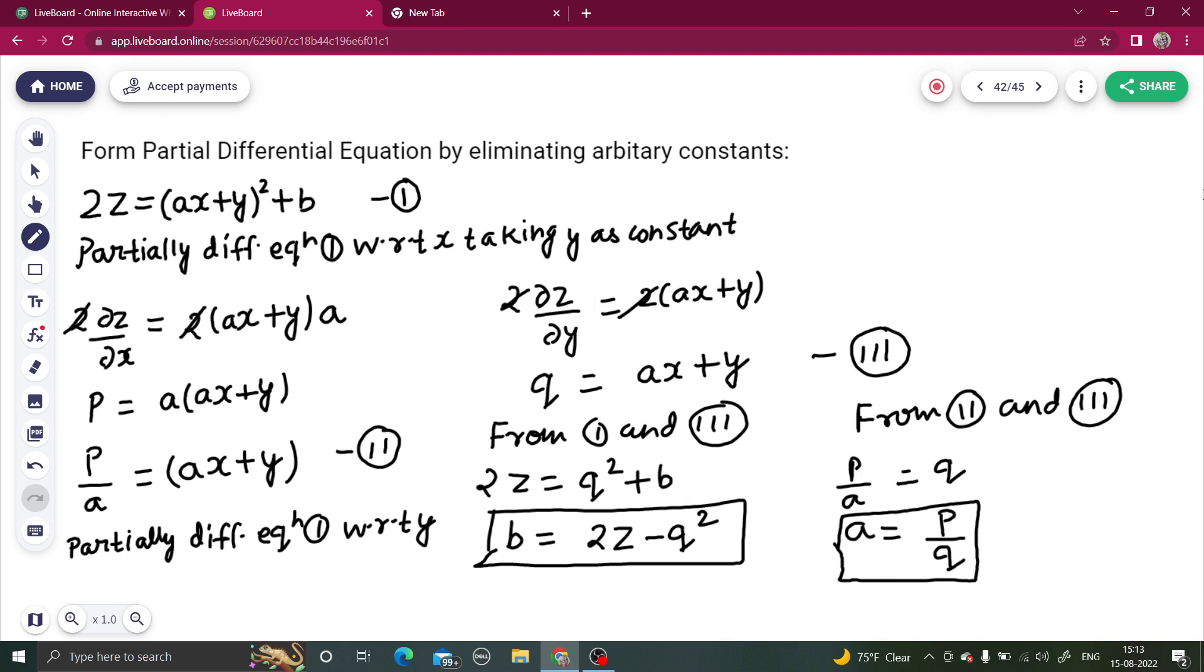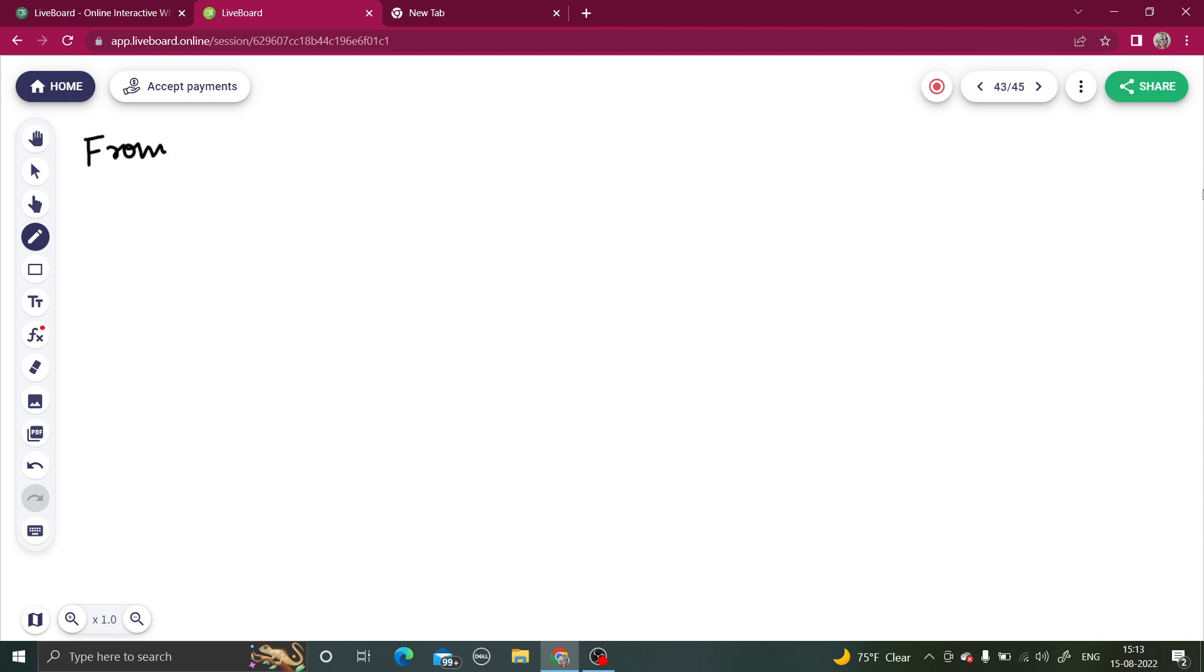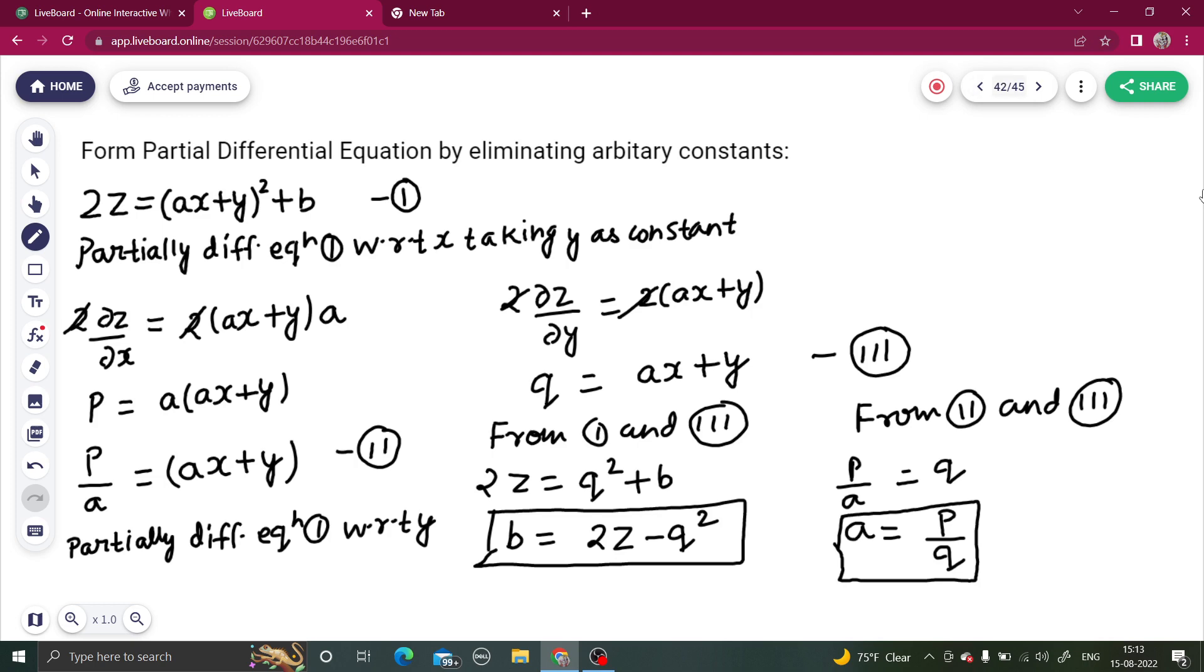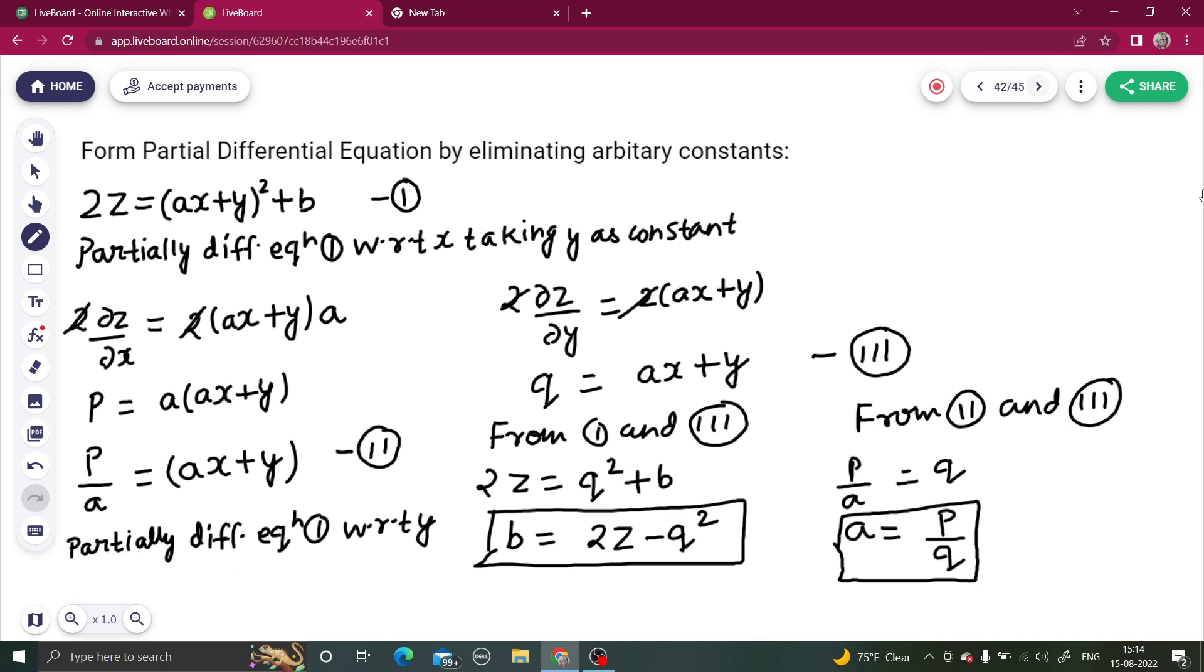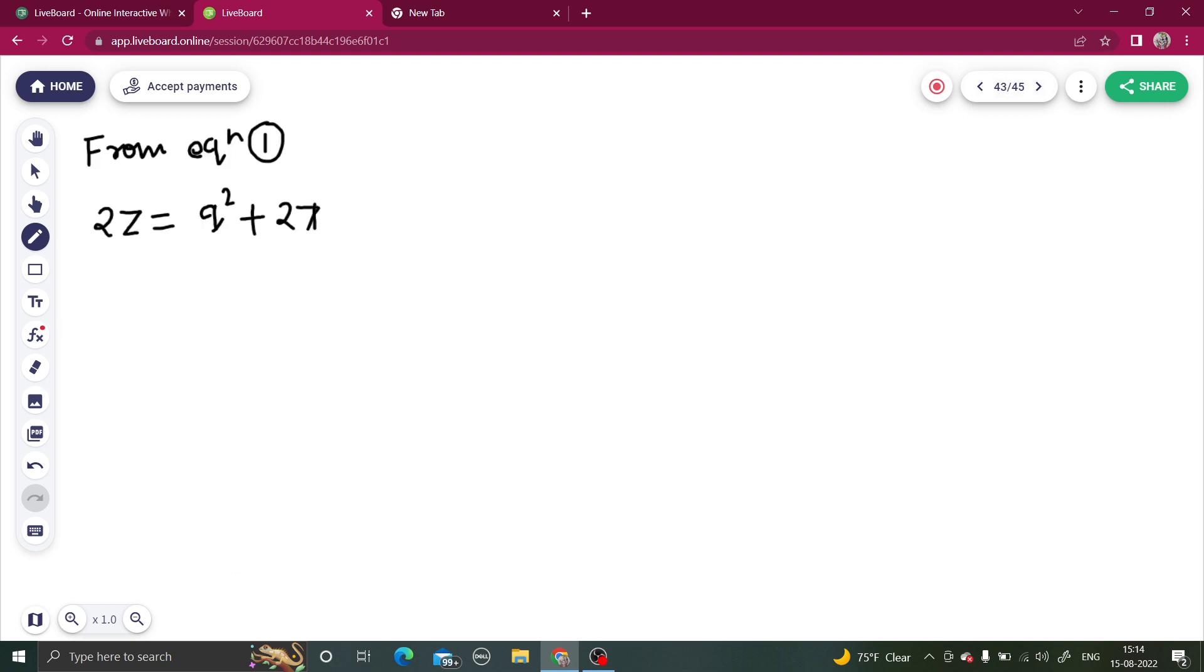So you have got the value of a and you have got the value of b. Let's again come to equation number one. From equation number one, we have got 2z equals to (ax + y) whole square, so that is going to give you q whole square. And in place of b you can write 2z minus q square.